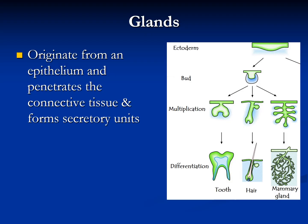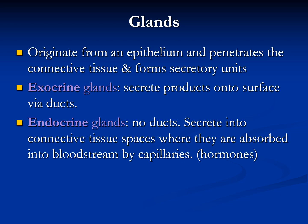To recap: the epithelium gives rise to glands that grow down into the underlying connective tissue. There is multiplication of these glands. If they keep their duct, we call them exocrine; if they lose their duct, we call them endocrine. The important point is that glands originate from the epithelium, penetrate the connective tissue to form the secretory unit, and have both a duct and secretory units.